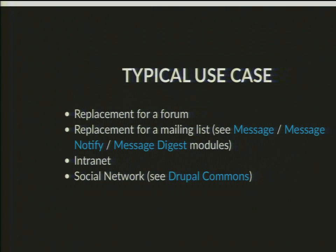Typical use cases: replacement for a forum — that's a big one — and replacement for a mailing list. I have one client where we converted mailing lists over to an online social network kind of system. If you're doing any kind of email notifications for Organic Groups, look at the Message Stack, which includes Message, Message Notify, and Message Digest modules — a good way to blast out notifications when people post new content. This also covers intranets or social networks; you can look at Drupal Commons, a distribution that has Organic Groups and does everything out of the box.